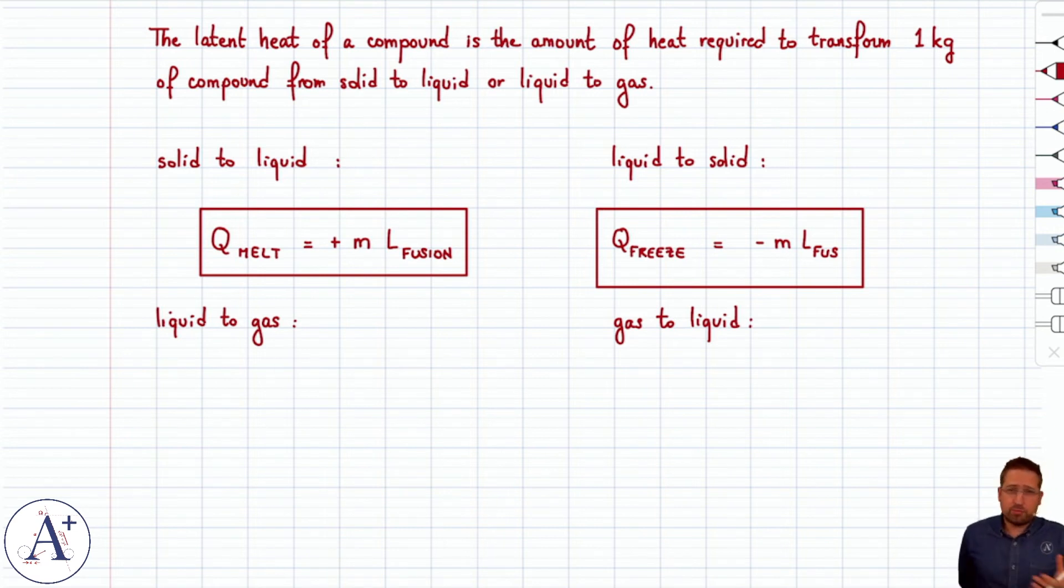But second of all, it means you have to pick the right formula. And it's not like Q equals mc delta T. That was nice. Delta T positive, Q positive. Delta T negative, Q negative. Cool. The formula takes care of it for you.